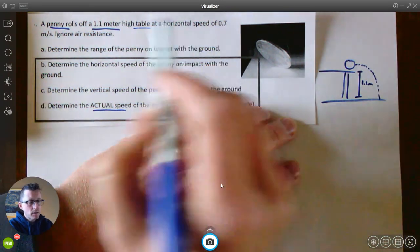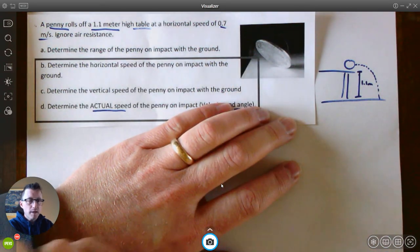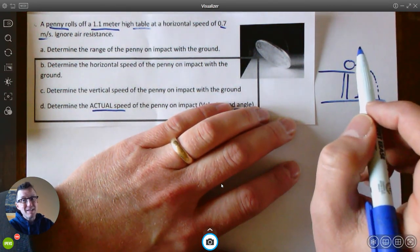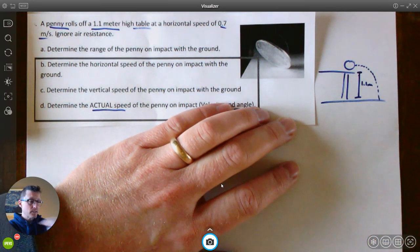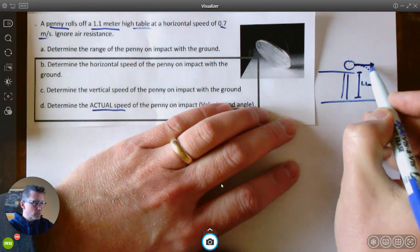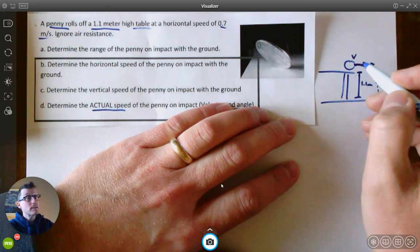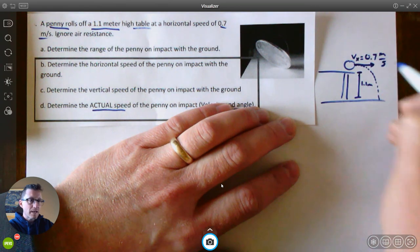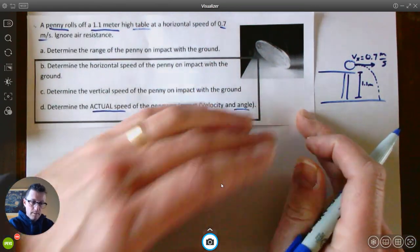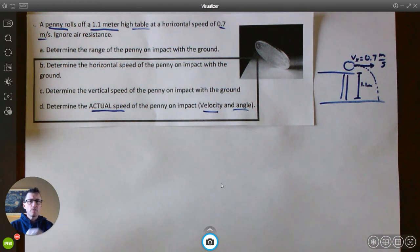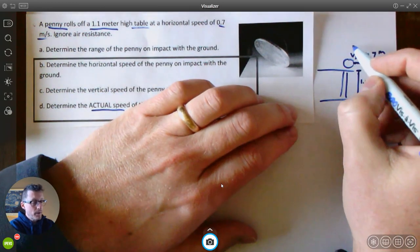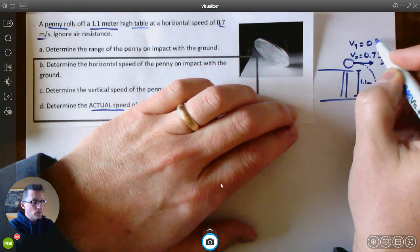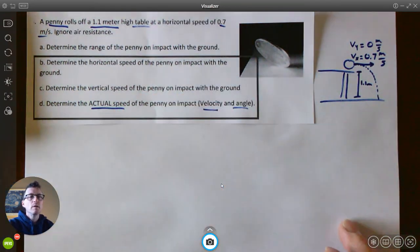And we know the penny has a speed of 0.7 meters per second. Now, what direction is that? That's key. Think about that. If a penny is rolling, it's rolling sideways off a table. So our speed is straight sideways. Now, what type of speed is that? That's a VX. So our VX equals 0.7 meters per second at the beginning. Now, think about that. If our speed is only straight sideways, what's our VY? That's right. Our VY is going to be zero.